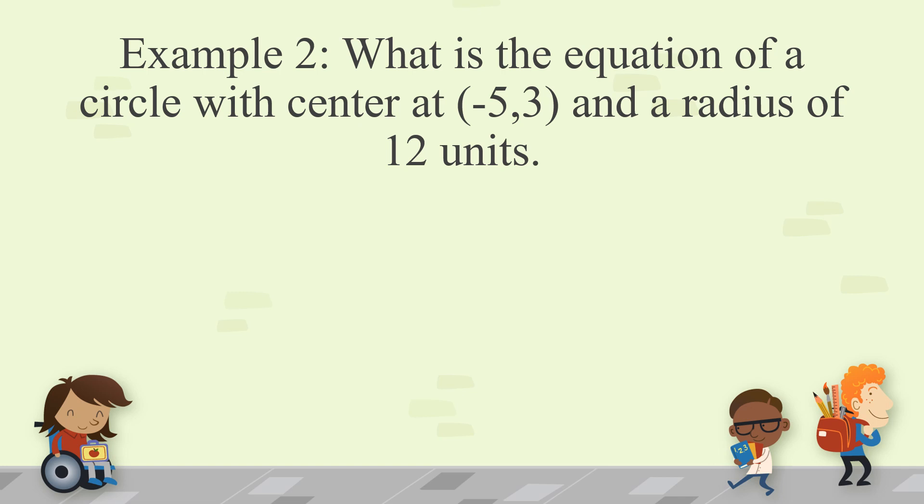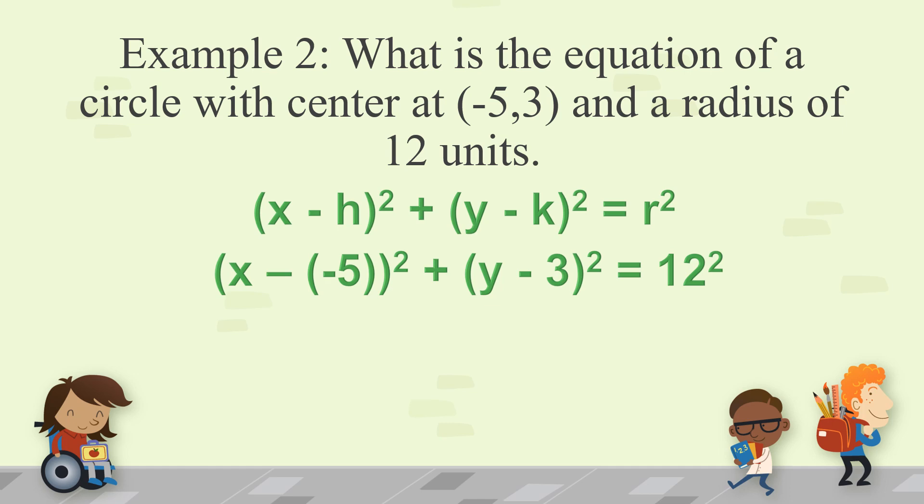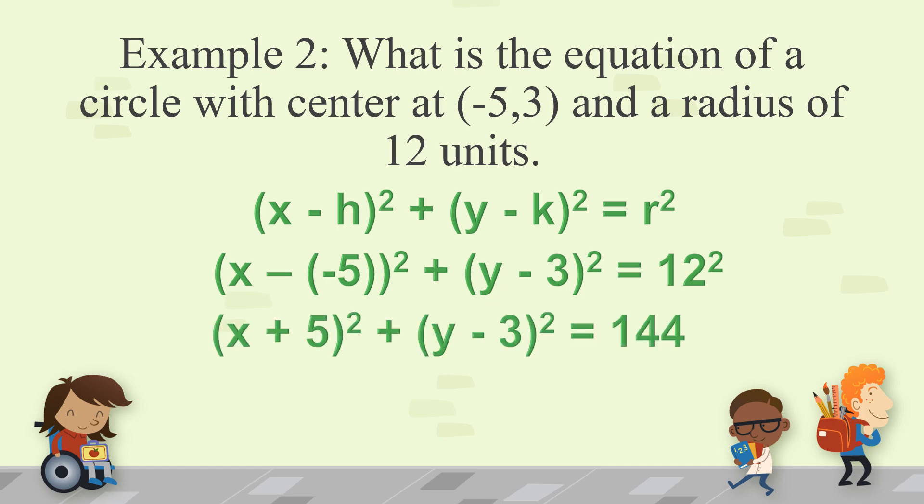Example number 2: What is the equation of a circle with center at (−5, 3) and the radius of 12 units? Here, h is negative 5 and k is positive 3, and r is 12. Substituting into the equation gives x minus (−5) squared plus y minus 3 squared is equal to 12 squared. Since negative times negative is positive, this becomes x plus 5 squared plus y minus 3 squared is equal to 144.